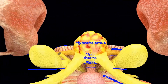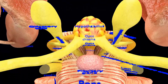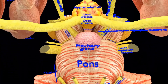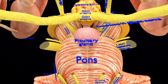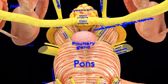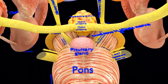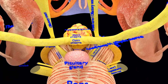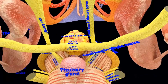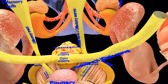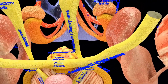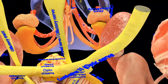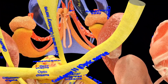In the previous parts of this video series related to the brain, I have shown the superficial and deeper brain structures. This part, being the last of the five-part video series, covers the cerebellum, the cranial nerves, and other brain structures and aspects which could not be covered in the previous parts.